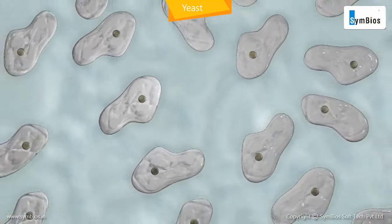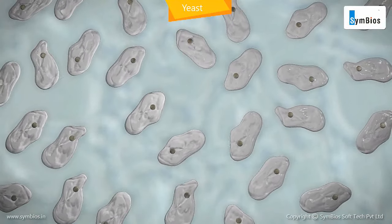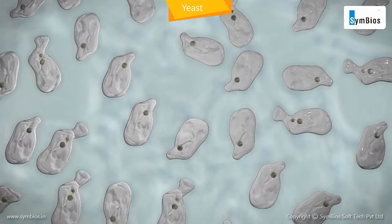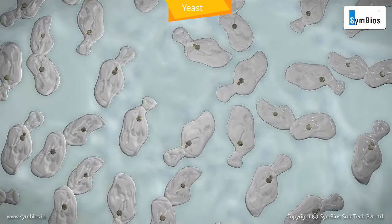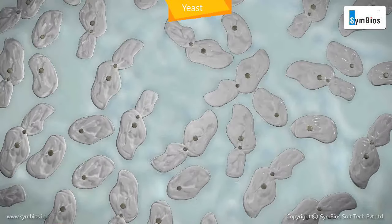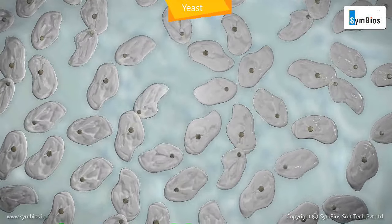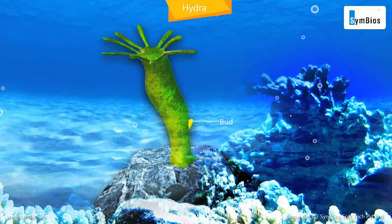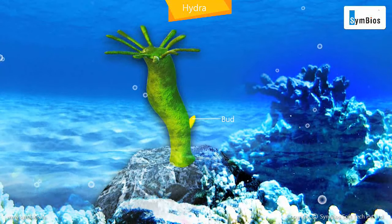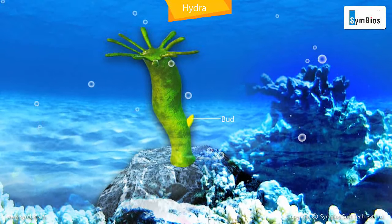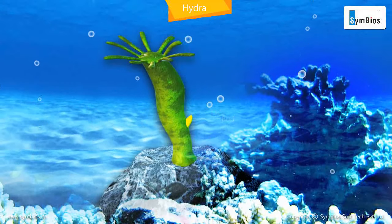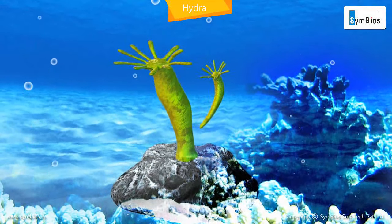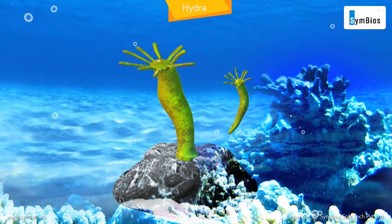In yeast, the buds form rapidly and create a chain of yeast cells if there is enough supply of nutrition. In hydra, a bud appears on the body wall which grows into a full hydra in a day or two and separates from the parent.